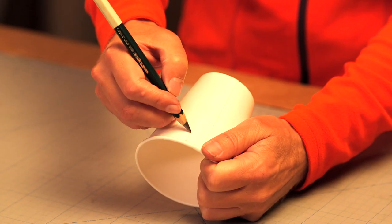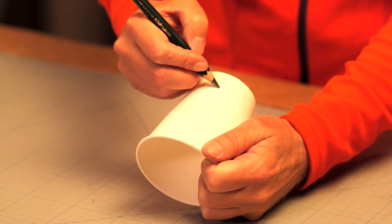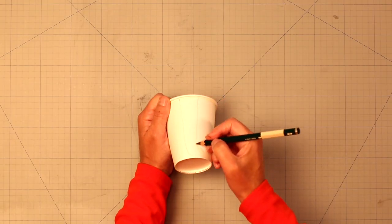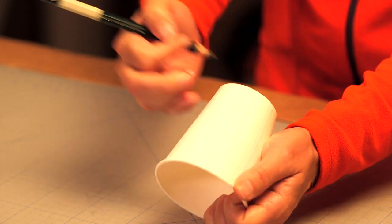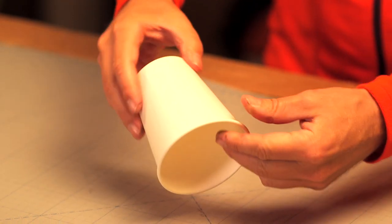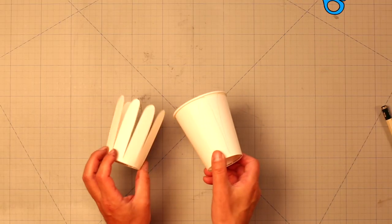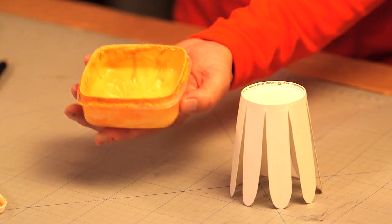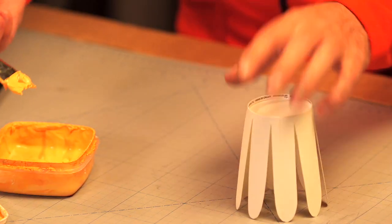I just draw a few lines here. Cut them out so that the cup looks like this, and paint it orange on the inside.